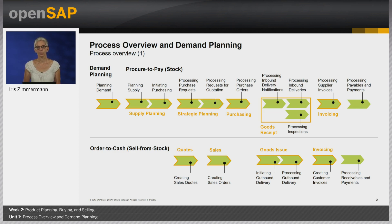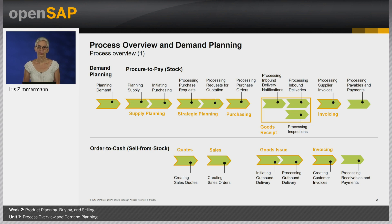I will start with demand planning in Unit 1, which deals with forecasting the customer demand. In Unit 2, we will cover supply planning that ensures all product demand is covered with the respective supply. In Unit 3, Purchasing, I will explain the strategic sourcing and purchase order handling. In Unit 4, I will cover the logistics execution with the goods received process to the warehouse and continue with invoice verification. The transfer to financials for payment is covered in the previous OpenSAP course, SAP Business by Design Financials.